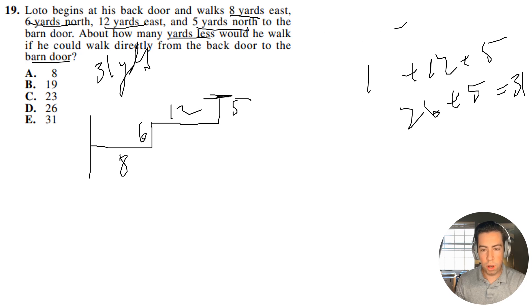Now it's asking us what would be the difference if he could just walk straight there. So what they're asking is if he could do something like this and just go straight through, how many yards less would he walk? So guys, what we can do is we can actually just treat this as a triangle. So we can just go ahead and fill out a triangle here.